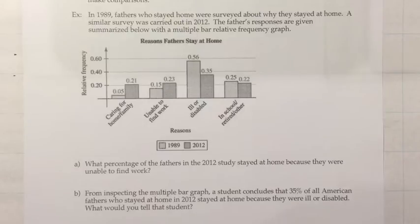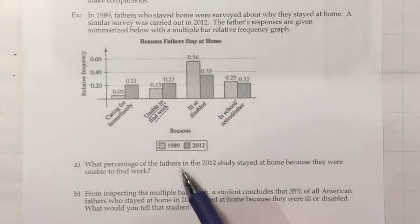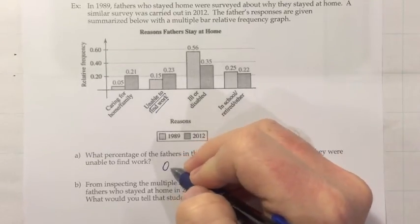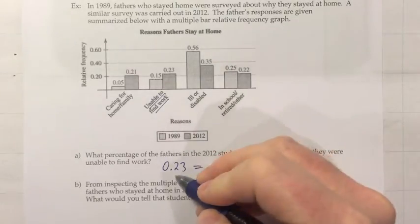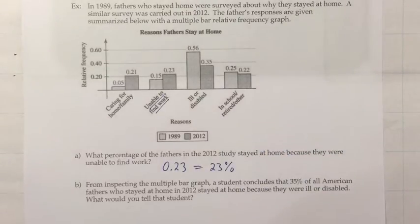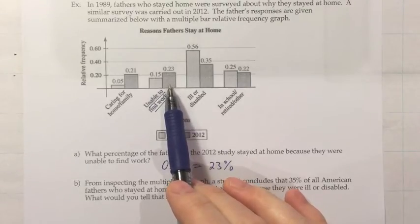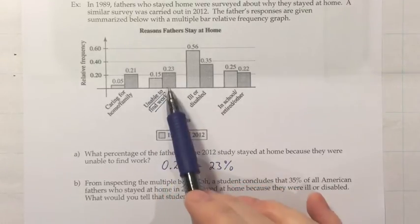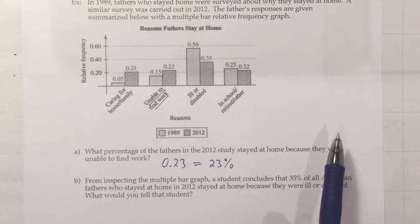What percentage of fathers in 2012 stayed home because they were unable to find work? Unable to find work: in 2012, the relative frequency marked on the bar is 0.23. Since relative frequency is the decimal form of the percentage, we shift the decimal two spots: 23%. Notably, this is higher than in 1989, when it was only 15%.